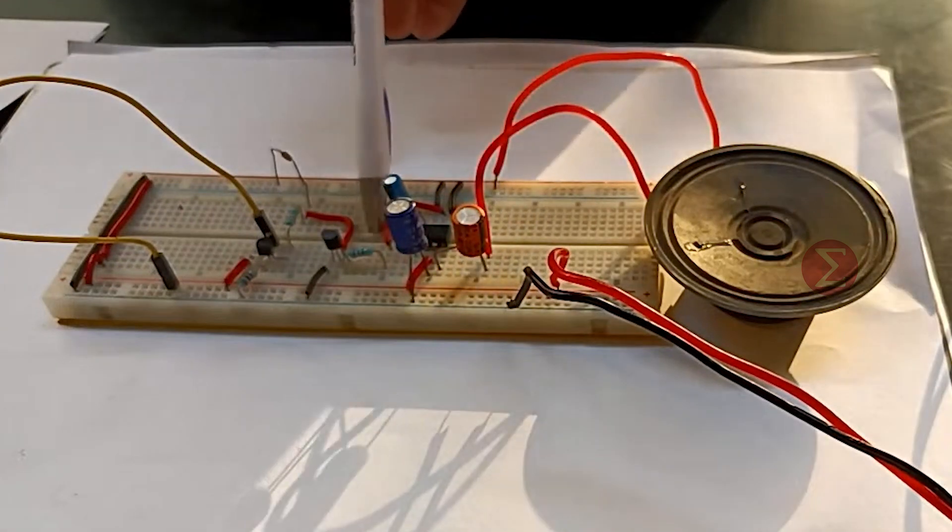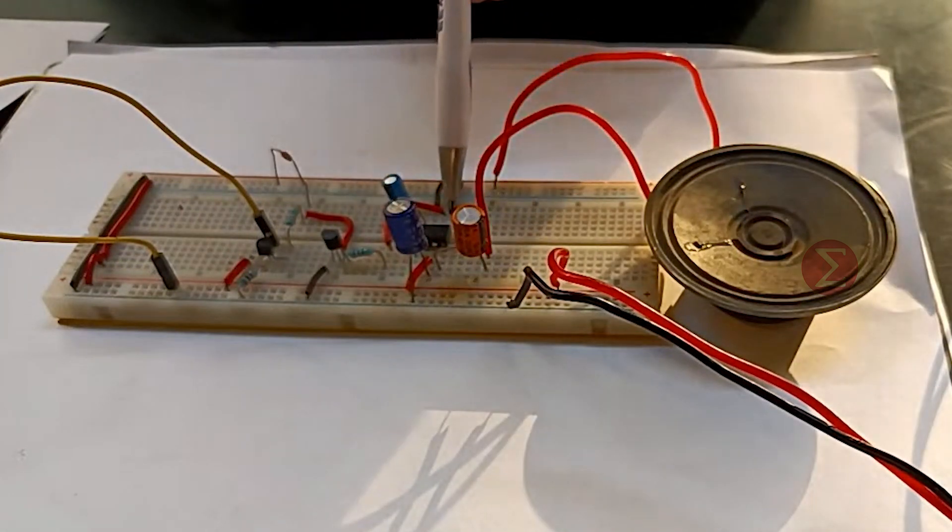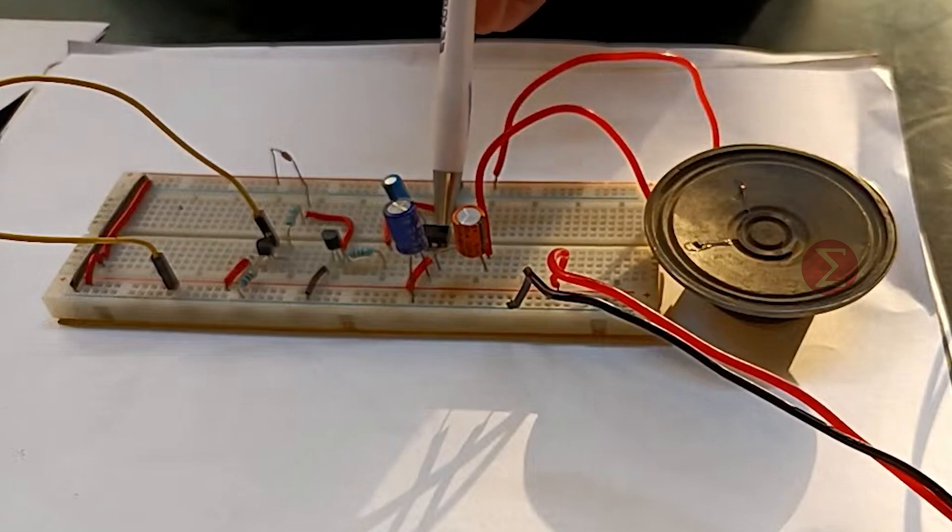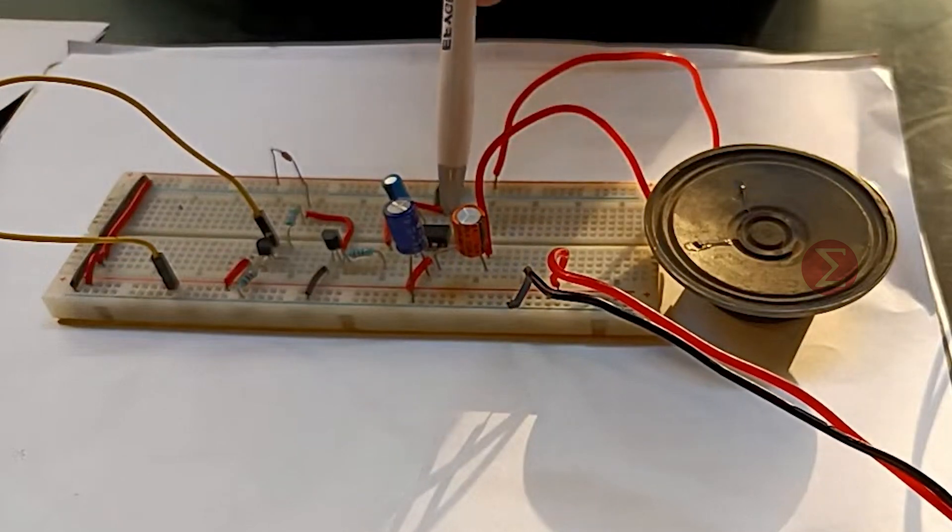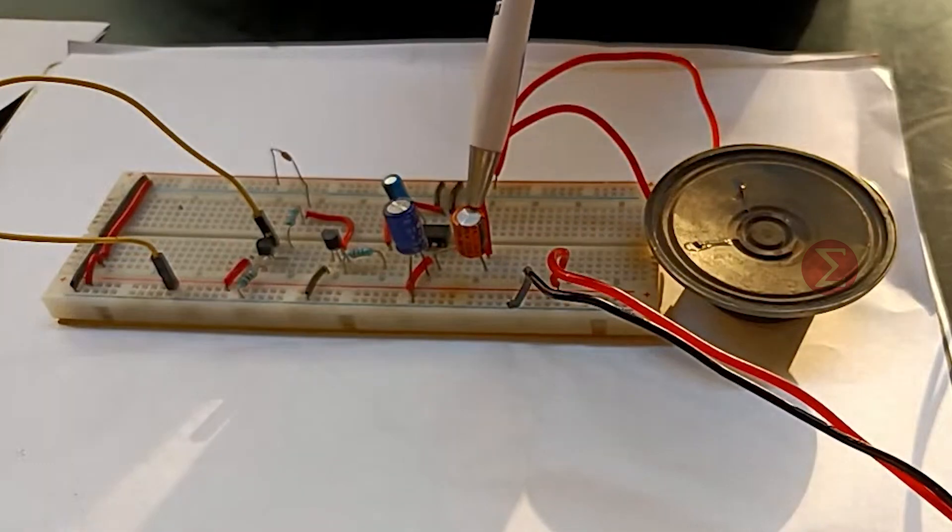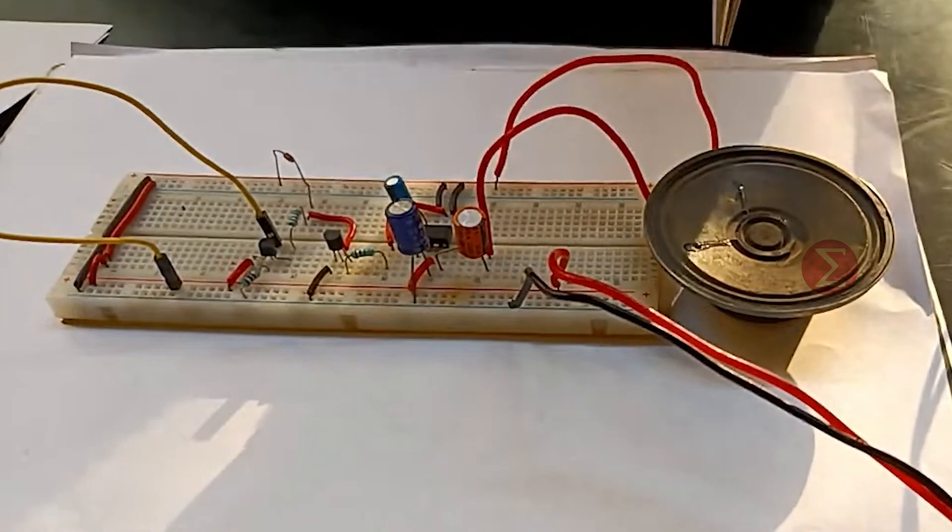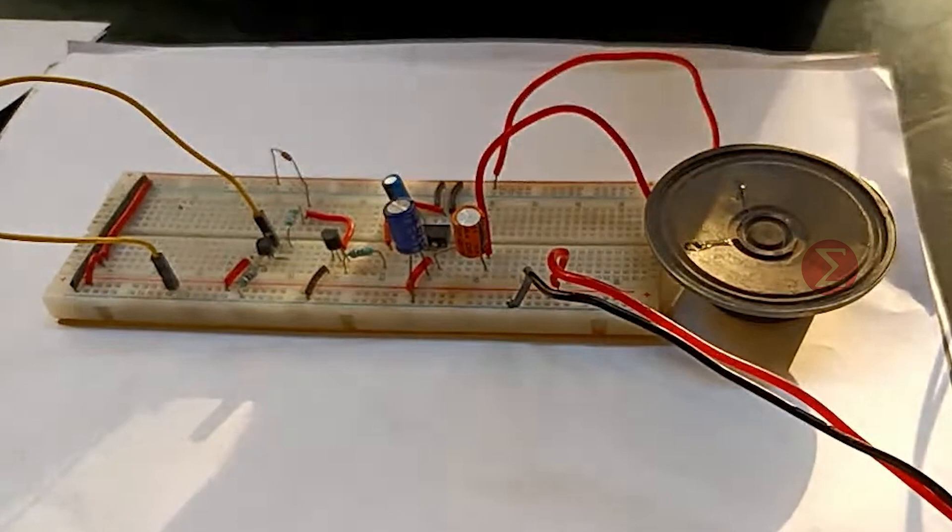The output of the melody IC goes to pin number 3 of the amplifier IC. A low power amplifier is used to amplify the audio of melody IC. The output of the amplifier goes to the speaker via a capacitor in between.